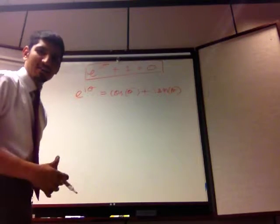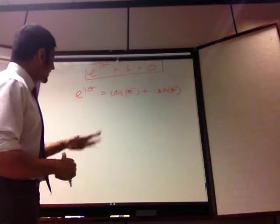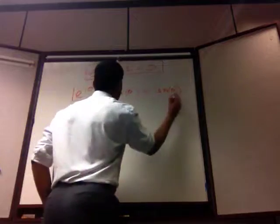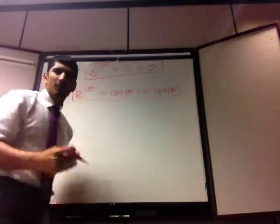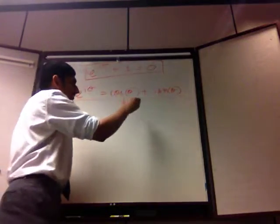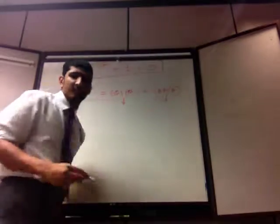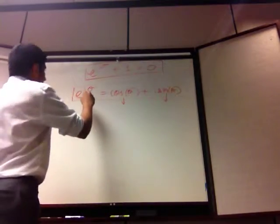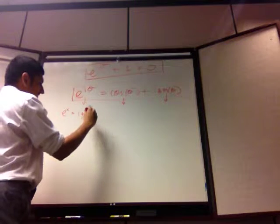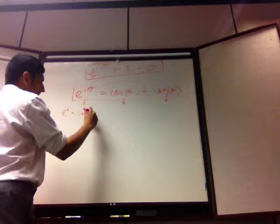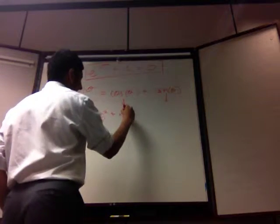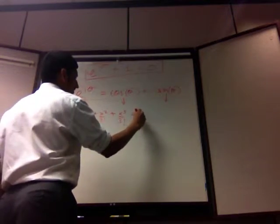But why is this true? Well, that would take us into another lecture, but a good way to prove it is using Taylor series. You can expand this into a Taylor series, you can expand this into a Taylor series, and you can expand this into a Taylor series. Like, we know e to the x is equal to 1 plus x plus x squared by 2 factorial plus x cubed by 3 factorial, and so on.